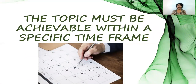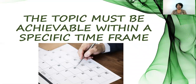The next thing is that our topic must be achievable within a specific timeframe. Whenever you're doing a project, you will have a specified timeframe for when to complete it. Your research study must be something that you can complete within that specified amount of time. And these are the basic criteria for selecting a research topic. I hope that this helps you to develop your own topic for your course. Thank you so much.